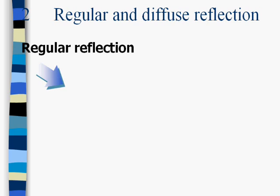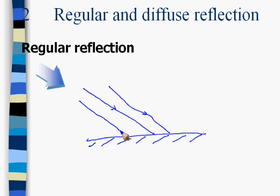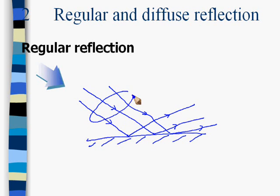We have two types of reflection: regular reflection and diffused reflection. In regular reflection, if we have a plain polished surface and a beam of parallel light rays falls on it, the rays obey the laws of reflection such that the parallel incident ray beam remains parallel after reflection as well. This is called regular reflection.